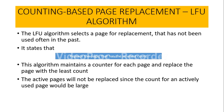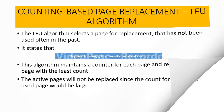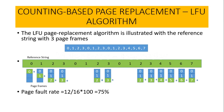Let us understand the idea with the help of an example. Here I have considered one reference string, and we are taking three page frames available. The first three page faults will occur because we are having three page frames, so for the first three page faults we are going to load pages 0, 1, and 2. After that, for the fourth page fault we need one page frame where we can load page number 3.